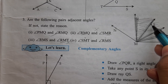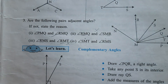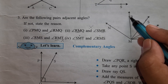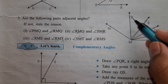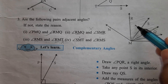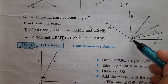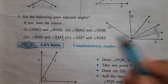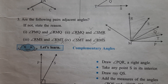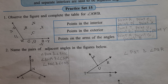The last one: angle S, M, T and angle R, M, S. Their interiors are separate, arm M, S is common, and vertex M is also common. So R, M, S and S, M, T are adjacent angles. So, understood the meaning of adjacent angles? Practice set 15 — you have to solve in your notebook. Thank you.